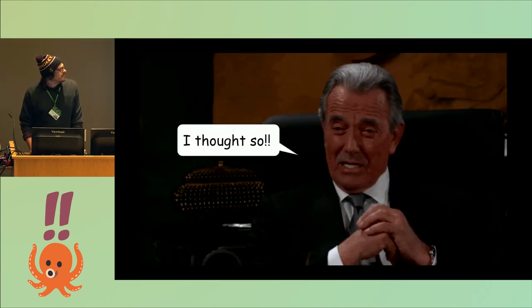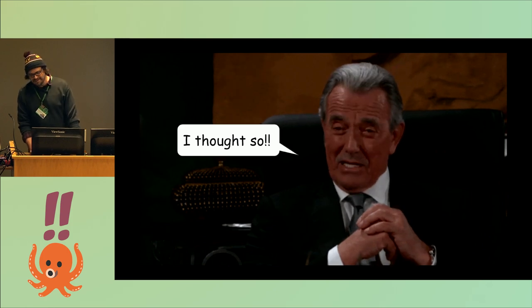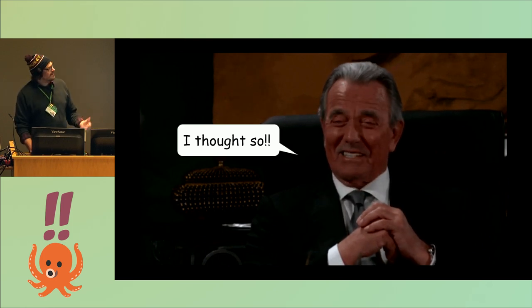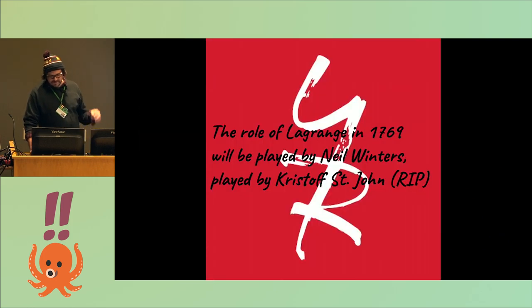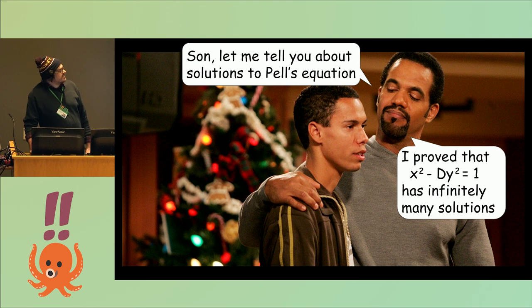Archimedes is very pleased with himself and the problem kind of goes away. So fast forward about 2,000 years to French mathematician Lagrange. These equations are now known as Pell equations: x squared minus d y squared, where d is some positive integer. Lagrange proved that they have infinitely many solutions.